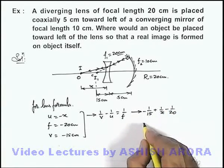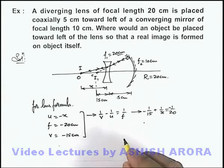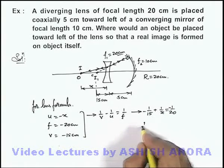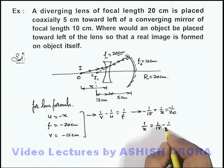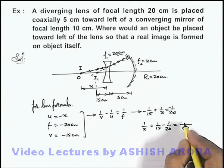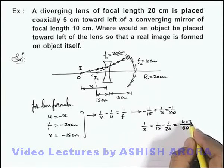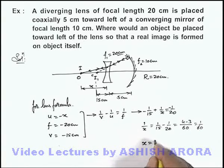On simplifying we get 1 by x is equal to 1 by 15 minus 1 by 20. We can take LCM to be 60 here and this will be 4 minus 3, that will be 1 by 60.